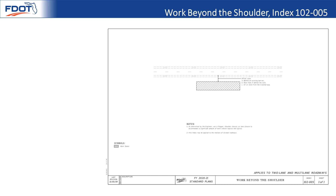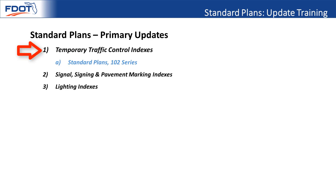Index 102-000 working on the shoulder is a combination of indexes 102-601 and 102-601. A few different indexes have been combined, mainly because changes were occurring on one index and not the other when the work was very similar — there shouldn't have been significant differences. Any of the indexes listed in the bottom corner applies to two-lane and multi-lane roadways, denoting that there had previously been two indexes for that scenario.